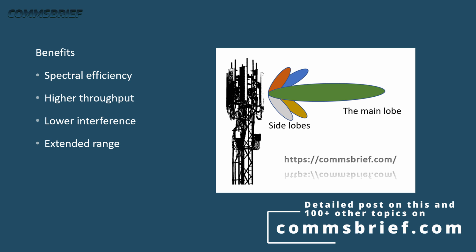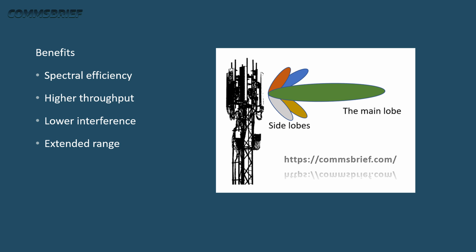Another benefit is lower interference. The beamforming technique used in Massive MIMO provides targeted transmission of the radio signal, making it more robust in a specific direction — offering directivity of energy. The main beam, which is the strongest, is targeted in the desired direction, while the side beams or side lobes become weaker, which minimizes potential interference between beams.